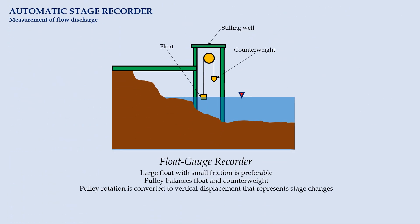To further ease the process, automatic stage recorders can be used. Float gauge recorder is probably the most common one. It consists of a float which balances over a pulley using counterweight. The float is always in contact with the water surface. Large float with small friction is preferable to ensure the instrument is sensitive enough to respond with the change in stage. The pulley is connected to a combination of a pen and clockwork driven drum. This mechanism converts the pulley rotation into equivalent vertical displacement that represents the changes in water surface elevation. The entire instrument is properly enclosed and protected against damages in stilling well.